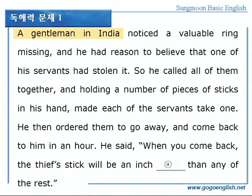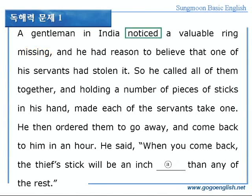네, 시작해보죠. A gentleman in India, 인도의 한 신사가 noticed, 알게 되었다, a valuable ring, 귀중한 반지가 missing, 사라진, 없어진, 사라졌다라는 것을 알게 되었다. 자, 먼저 notice에 동그라미 치시죠. A valuable ring, 밑줄, 목적어입니다.